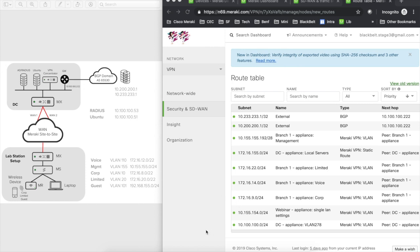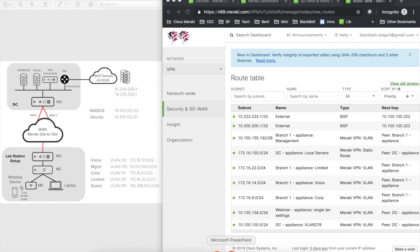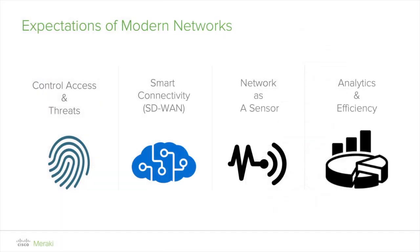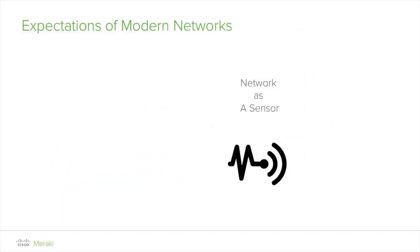That's a quick overview of how SD-WAN works and how routing works in general. In the next section we're going to talk about how we can use Meraki devices as sensors and we'll look at some API calls.